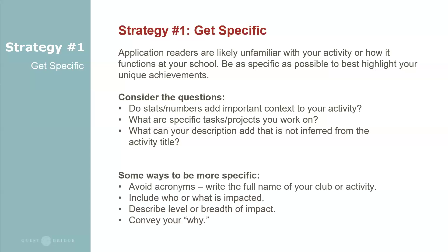Some other ways to be more specific: avoid acronyms. If your club or workplace has an acronym and it's not obvious what that acronym refers to, make sure to write out the full name in the activity title, and then you can use the acronym once you've established what it means. Include who or what is impacted. For example, are you directly tutoring elementary age students who are struggling with math, or proposing policies at your school that would decrease environmental waste? What is the level or breadth of this impact — directly within your school, a larger community, or even on a national or international level?